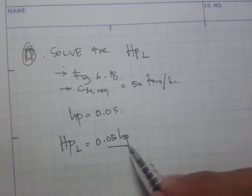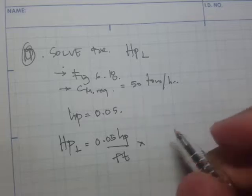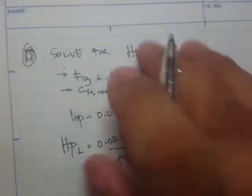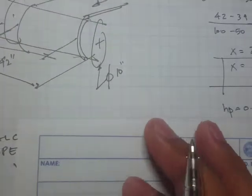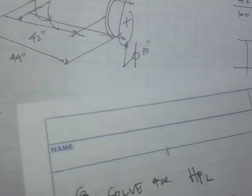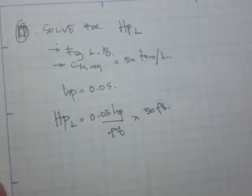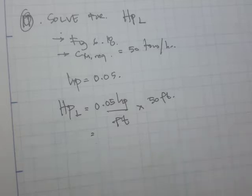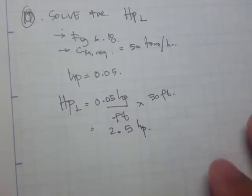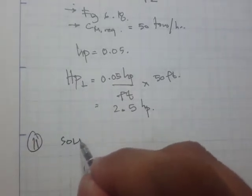The horsepower required to lift the material is 0.05 HP per foot of lift times the elevation of 50 feet, so that's going to be 2.5 HP.